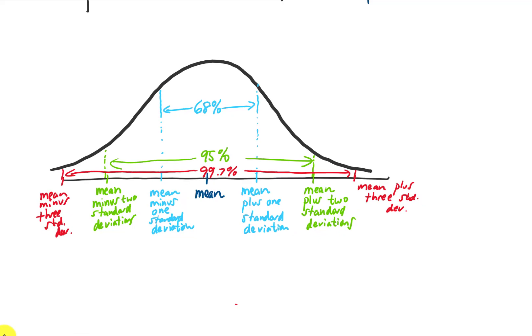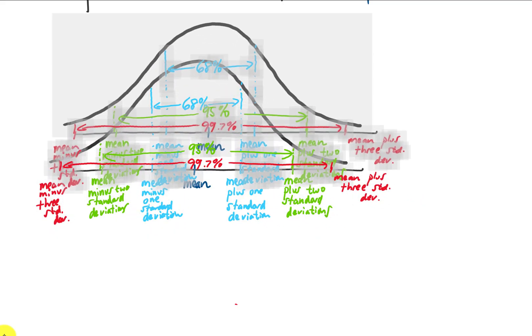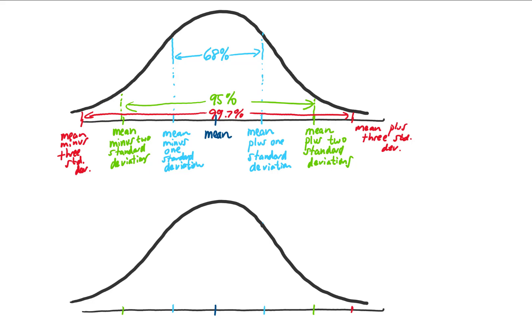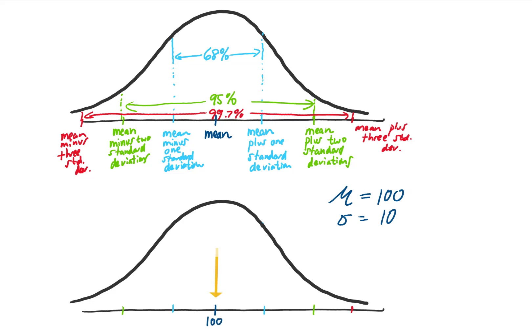I'm going to shrink this down to give you some actual numbers. Let's take a look at the distribution for IQ scores. The mean IQ score, which I'll call mu, is 100, and the standard deviation for IQ scores is typically 10. IQ scores are normally distributed. So on this graph, we would have a mean of 100 right in the middle. The mean plus one standard deviation would be 110, and the mean minus one standard deviation would be 90. Continuing to fill this graph out, we would have 120 and 130 IQ on one side, and 80 and 70 on the other.